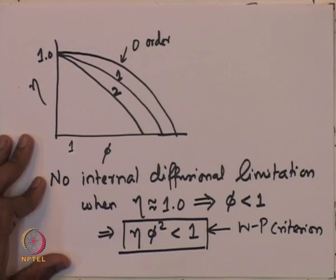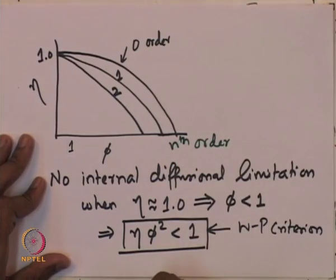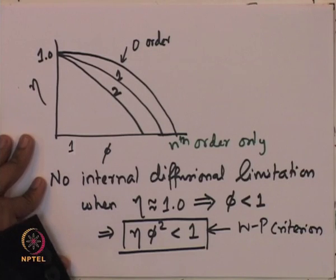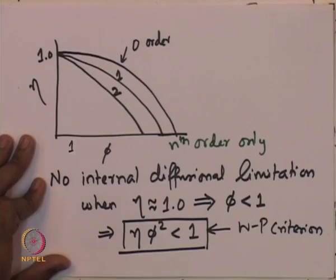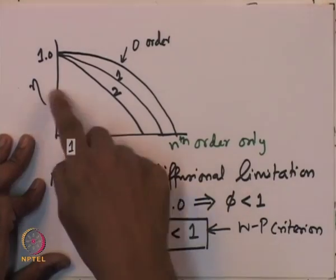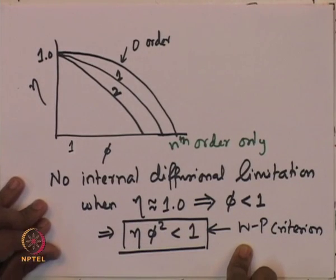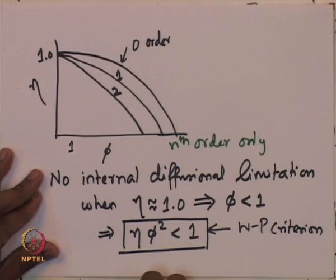As long as the eta-phi relationship behaves as depicted, the Weiss-Prater criterion will usually work. The eta versus phi curve looks like this for a typical nth order reaction. However, if it is not an nth order reaction — for example if there is adsorption of a species, product inhibition, or a non-isothermal system — then the eta versus phi curve can be different. Therefore, the condition eta·phi² < 1 is not always valid.